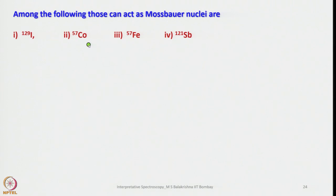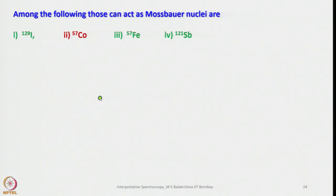Among the elements that can act as Mössbauer nuclei, iron-57 is of course the most extensively studied. Other elements that can be used include iodine-199, iron-57, and antimony-121. One can also use Mössbauer spectroscopy as a tool to understand their nuclear structures. Let me stop here. Thank you very much.